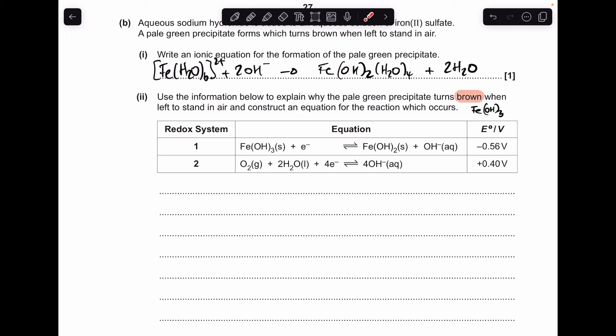Moving on to the next part, we've got to explain why the pale green precipitate turns brown. So basically what's happened is it's been oxidised. The Fe²⁺ has been oxidised to Fe(OH)₃. So we've just got to show why that happens using these two redox systems. The first thing we need to do is look at the electropotential values. You can see this one is more positive.